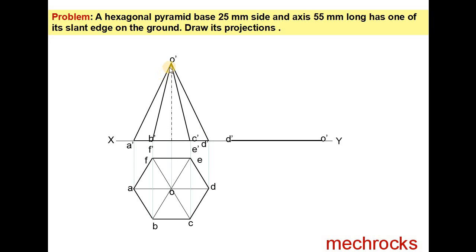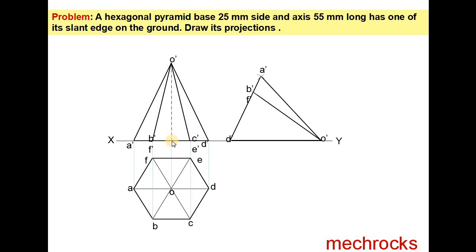Then look at A'. Take O' to A' as the radius and O' as the center. This is the radius O' to A'. Similarly take A' to D' as the radius and D' as the center to draw one more arc. This gives the new A'. Then join A' D' and O' A'. Similarly take D' to B' distance and draw the arc to get B'F'. Then join B' with O'. Similarly take D' to C' distance, name it as C'E', and join with O'.